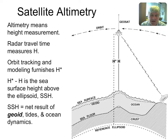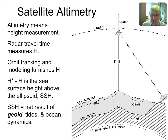Just to remind you, a satellite altimeter measures the height of the sea surface. A radar is used to get the distance from the spacecraft to the ocean's surface, and at the same time the spacecraft is also very accurately located. Subtracting those two things gives us the sea surface height. Sea surface height at any moment is the net result of something we call the geoid, and then tides, and ocean dynamics. So I need to spend a few minutes talking about the geoid, and that's always very painful.